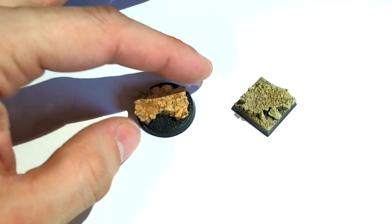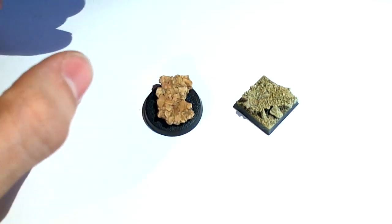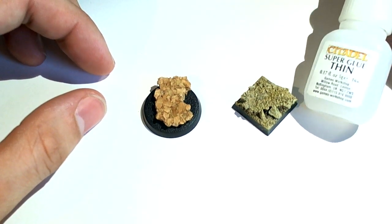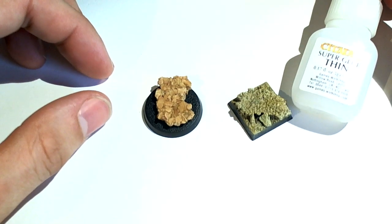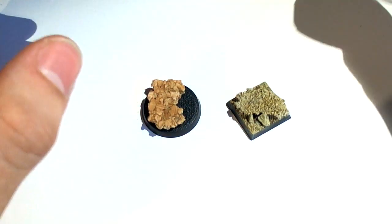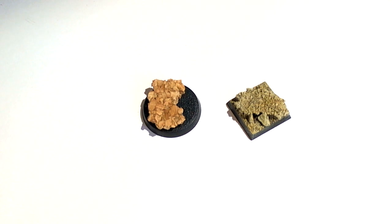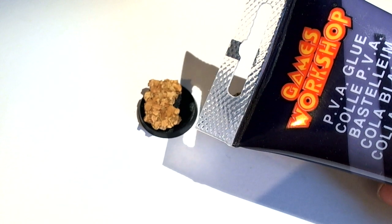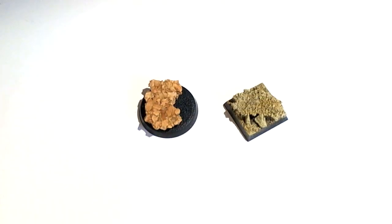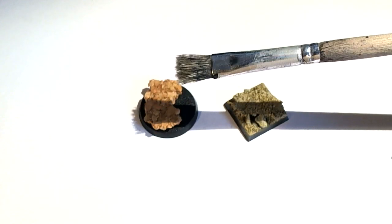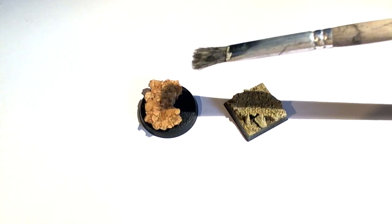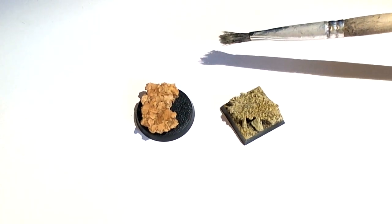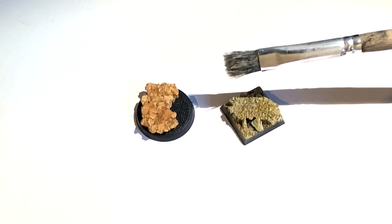You need cork, you need the base, you need super glue - I'm using the silver super glue, but as long as you're using any kind of super glue, that'll be fine. To glue the cork to the base, you'll need PVA glue, white glue. I'm using this Games Workshop one, but you can use any white glue you want. You need a pencil and a brush to apply the PVA glue.